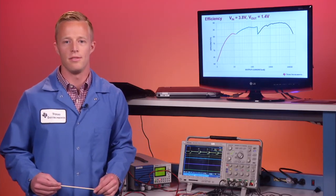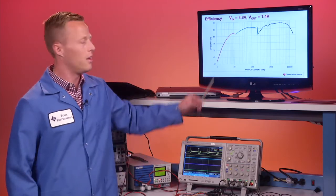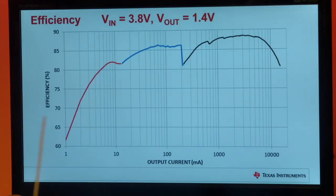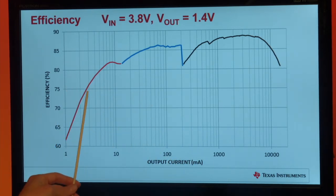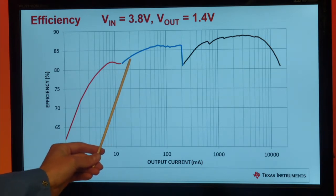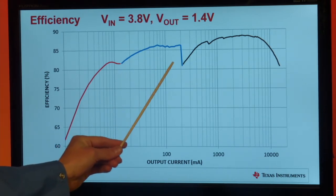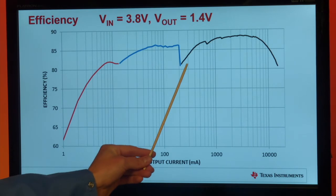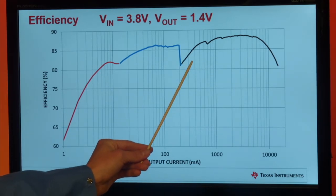Let's take a look at the efficiency of the LP8755. On this display, we're showing efficiency across a wide range of output currents. At low output current, we're in a low power PFM mode. As we continue to raise current, we go into a PFM mode, and eventually at higher currents, a PWM mode.